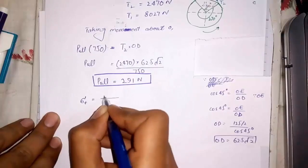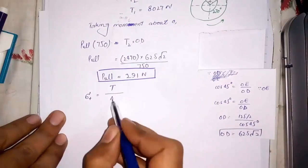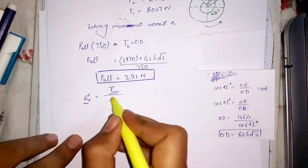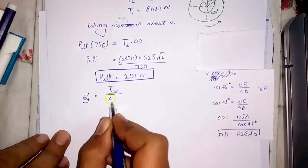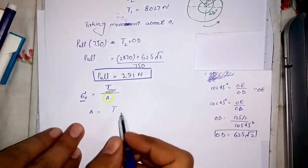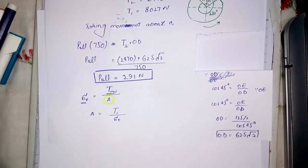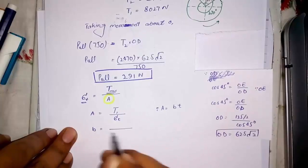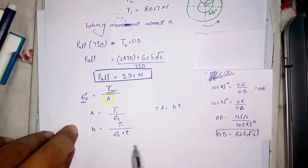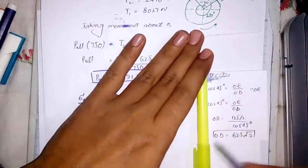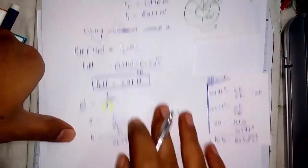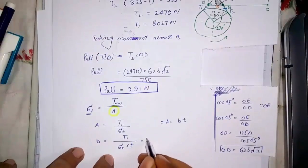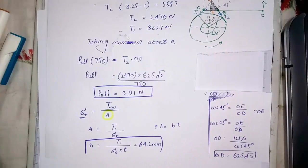Next we have to find the width of the band. First apply stress formula. From here we will find area which is width into thickness. And maximum tension is equal to T1. So, solving it, we have value of B.